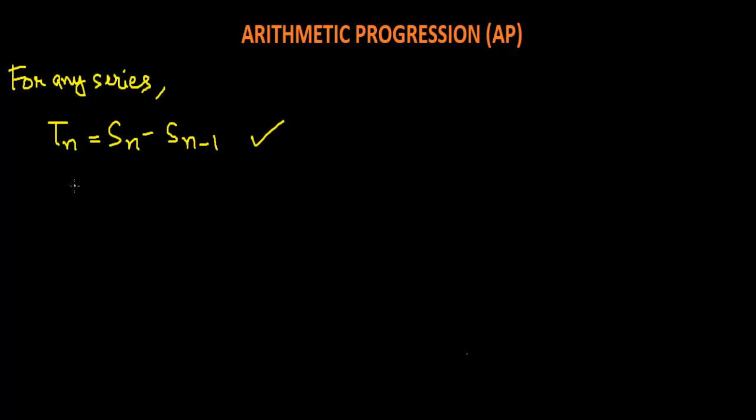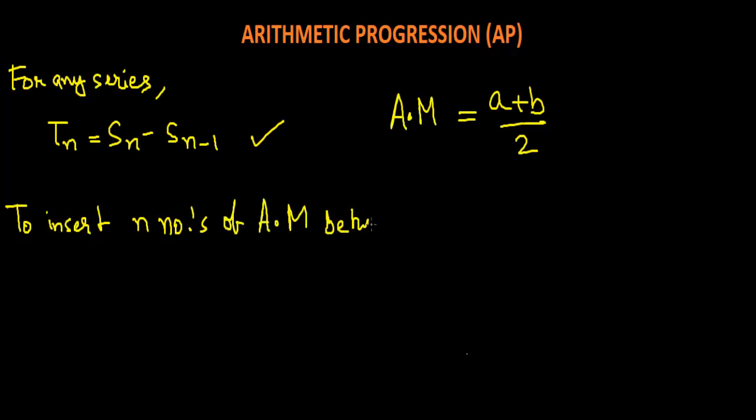There are some questions which come in examinations. First of all, let me tell that arithmetic mean, that is AM, is given as (a plus b) by 2. Now we will see to insert N numbers of arithmetic mean between two numbers.